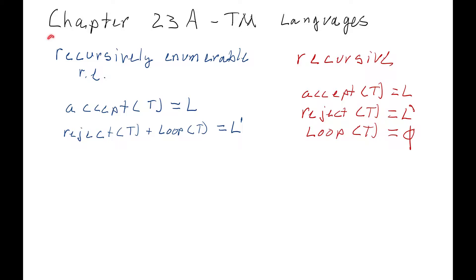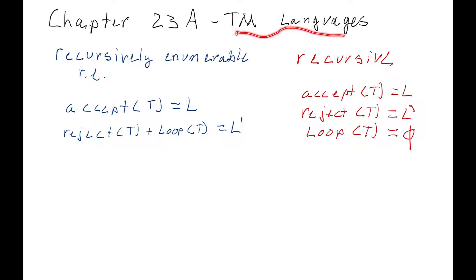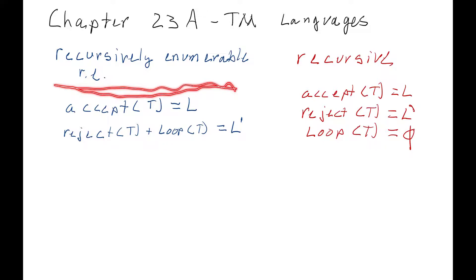Welcome to CS320, Chapter 23, where we're going to talk about Turing machine languages. We have two new definitions or classes of languages. One is called recursively enumerable, and we'll abbreviate that with a lowercase r and a lowercase e with periods, just so you don't confuse it with regular expressions.